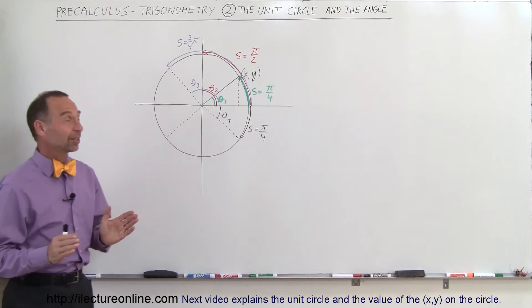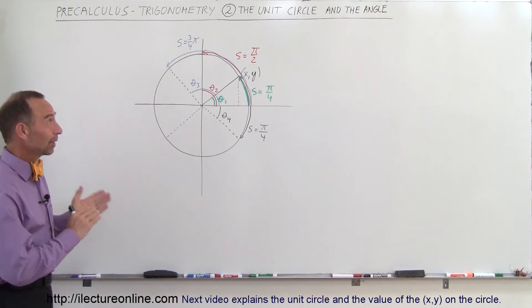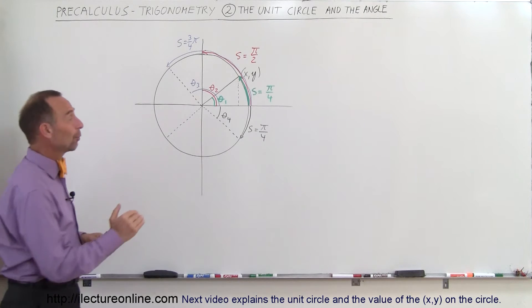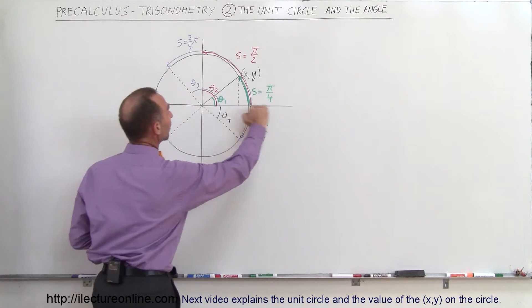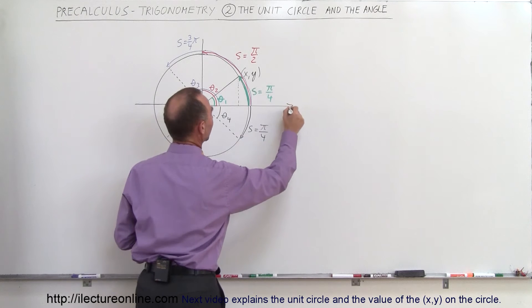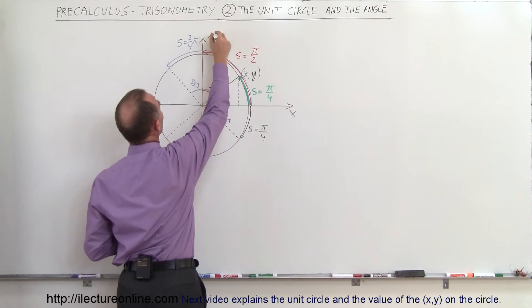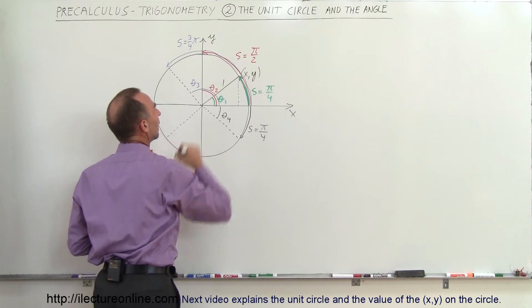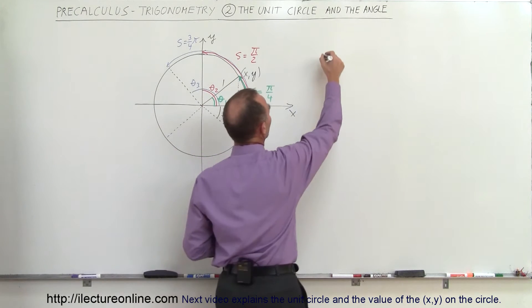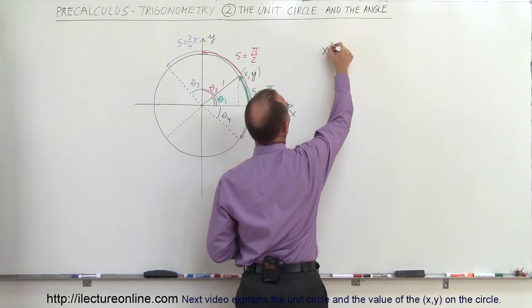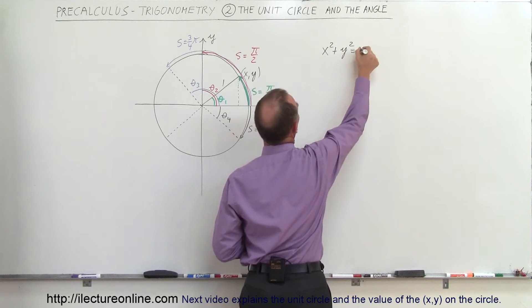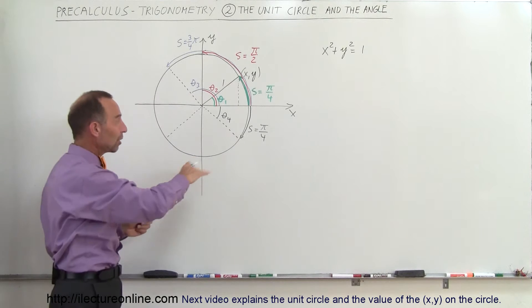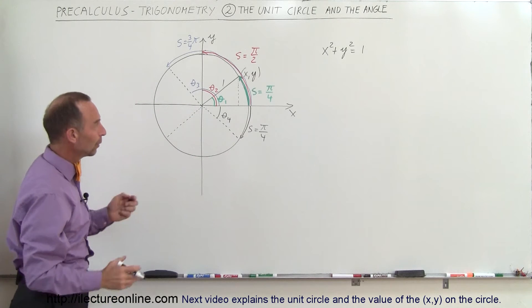Welcome to our lecture online. Here we're going to talk about the relationship between the unit circle and the angle. The angle is the reference between the horizontal x-axis and the y-axis. The unit circle means that the radius of the circle is equal to 1, and we know that for a unit circle, x squared plus y squared is equal to the radius squared — in this case, 1. So that is the equation of this circle, with radius being 1.